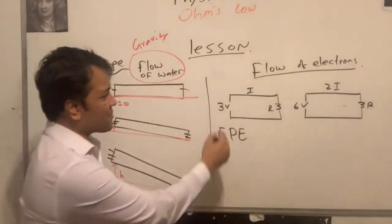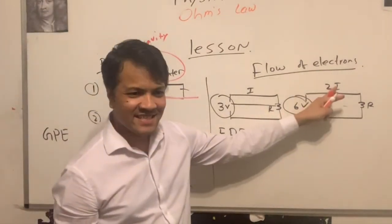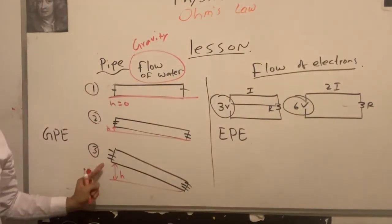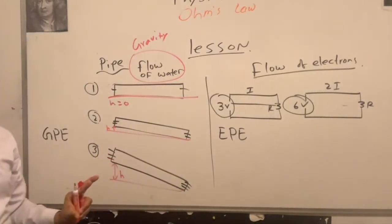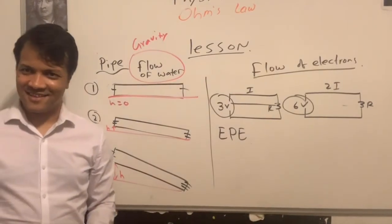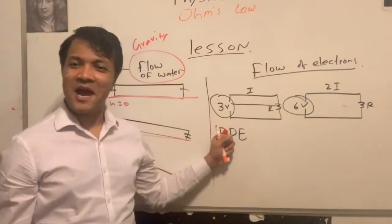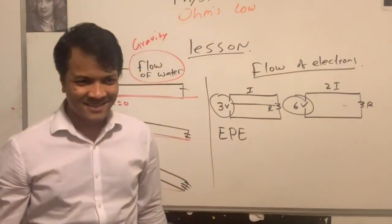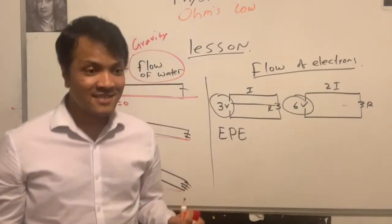If you increase electric potential energy by double, that increases the current by double. The current by double. If you increase gravity, that increases the flow of water. All right. You see the connection? Do you see the connection? If you increase the gravitational potential energy, that increases the flow of water. If you increase the electric potential energy, that increases the flow of current. Why? Because it increases the flow of electrons that carry the charge.